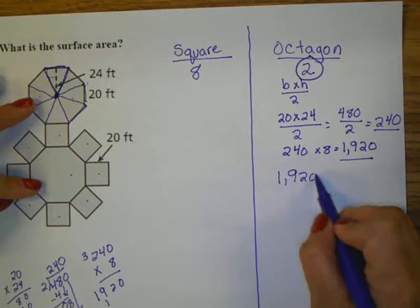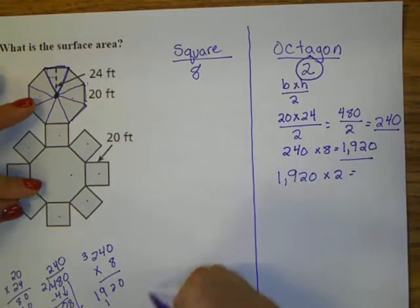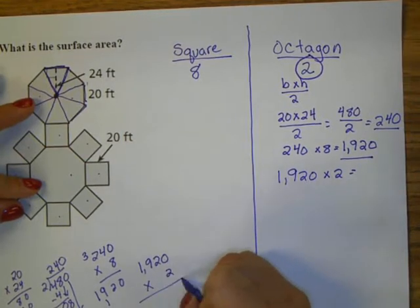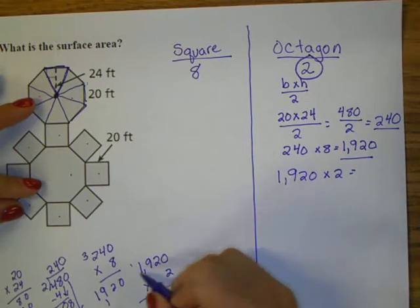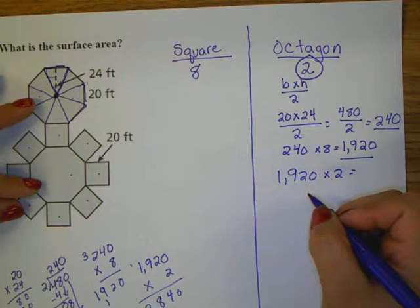I get 1920. That is the area of one octagon. There are two octagons, so I have to take this number and I now multiply it by two.